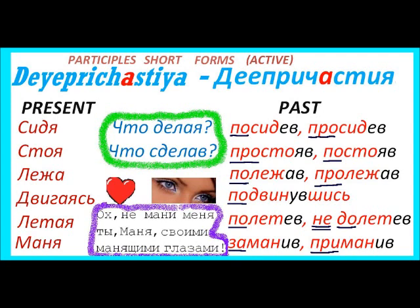The next one is подвинувшись — again with the same prefix по. Подвинуться means to move a little bit — подвинувшись means having moved a little bit. The next one is полетев — having flown. I'm also showing here the negative form. In Russian, negatives are very easy — just the particle не, written separately from verbs and the same separately from деепричастия. Не долетев — долететь means to reach a destination by flying — не долетев means not having reached the destination by flying.